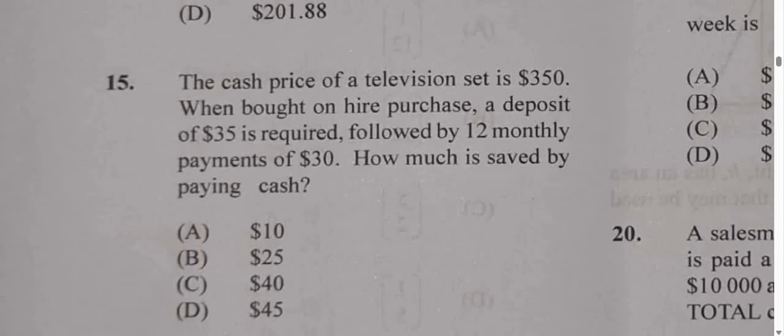If you want to buy cash, you're going to pay $350. But let's look at the hire purchase price then. What does it include? It includes a deposit of $35 up front, then 12 monthly payments of $30.